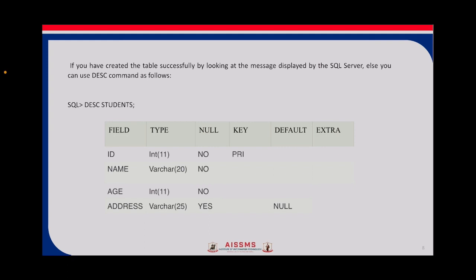If you want to know how many fields and attributes there are, what the constraints are, and what the data types are, then you fire the DESCRIBE query. If you are using MySQL server, you write DESC students — DESC is the describe keyword and students is the table name. It will display all the description and information of that particular table, showing fields like type, null, key, default, and extra. Under the field, you can see the attributes of the student table and the type of each column. Since ID is my primary key, in the key column you can see PRIMARY, verifiable using the DESCRIBE statement.